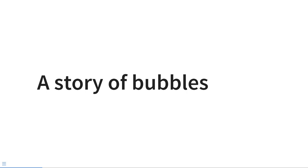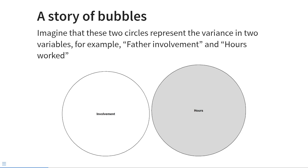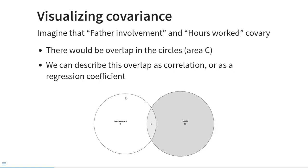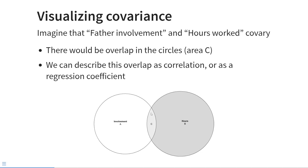I find that Venn diagrams are a supremely useful tool to explain how multiple regression works. Let me tell you a story of bubbles. These two bubbles represent the variance in two variables: on the left, father involvement, represented by the white circle, and hours worked, represented by the grey circle. These circles represent the total variance in those two variables. Father involvement and hours worked tend to co-vary, because if the father works more hours, he has fewer hours available to spend with his child, so hours worked will take a bite out of involvement with the child.